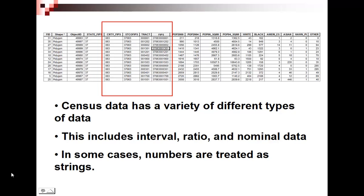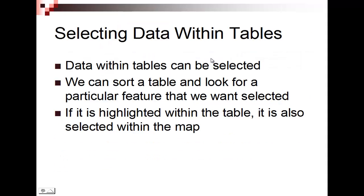The census has a variety of different types of data. We have interval, ratio, and nominal data. You can see the left-justified data here — even though it looks like numbers, they're not treated as numbers. In some cases, numbers are treated as strings. They're just unique identifying numbers to identify states, counties, and sub-county units such as tracts, census block groups, and census blocks. But I can see population here, I can sort this population, I can find population density less than or greater than a value. That's what we'll focus on now.